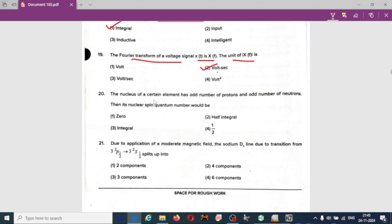Next: the nucleus of certain element has odd number of protons and odd number of neutrons, then its nuclear spin quantum number would be. For proton and neutron, they are fermions, so fermions usually have half integral spin. So option two is correct.